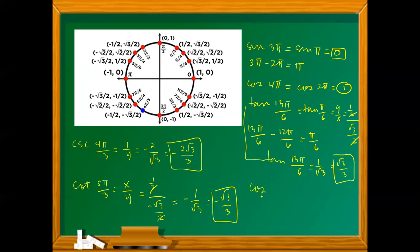How about cosine 5π over 2? Cosine 5π over 2 is equivalent to cosine π over 2. By inspection, the x-coordinate of arc length π over 2 is equal to 0. That is how we basically evaluate circular functions. Our next discussion will be working on the graph of circular functions. That's it for now.